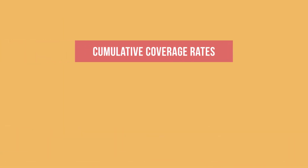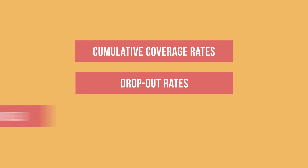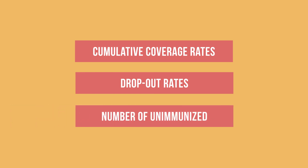Look for three important pieces of data: the cumulative coverage rate for pentavalent 1 or pentavalent 3, the dropout rate between pentavalent 1 and pentavalent 3, and the number of unimmunized infants and pregnant women.